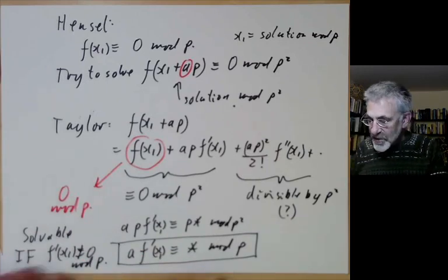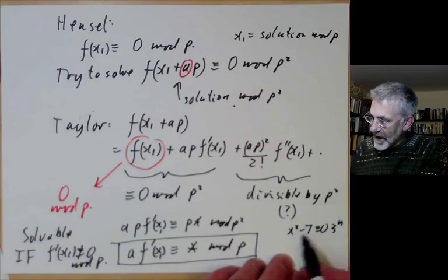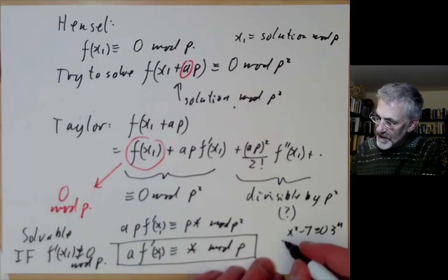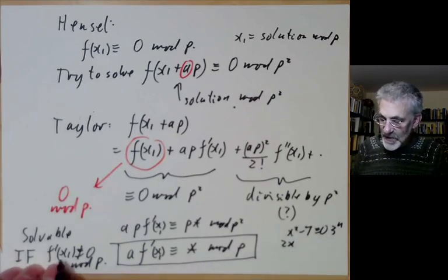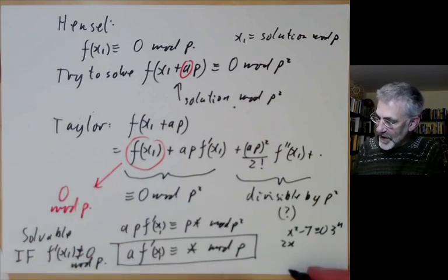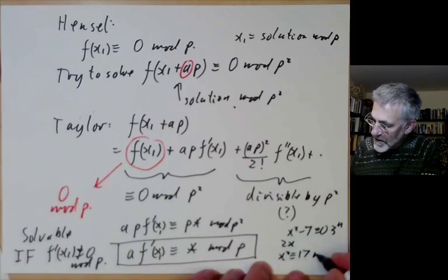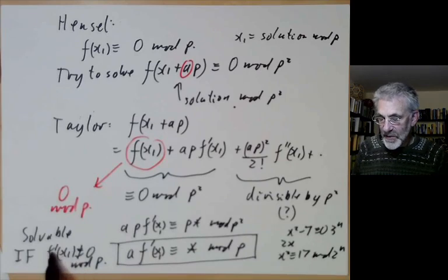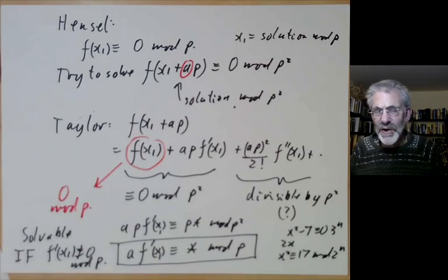Whereas for x² ≡ 17 mod 2^n, the derivative 2x is divisible by p = 2 at the solution found, which is why things were going wrong in that example.